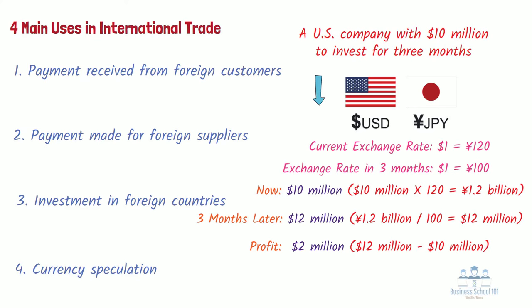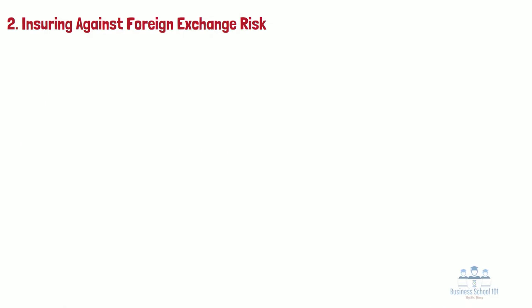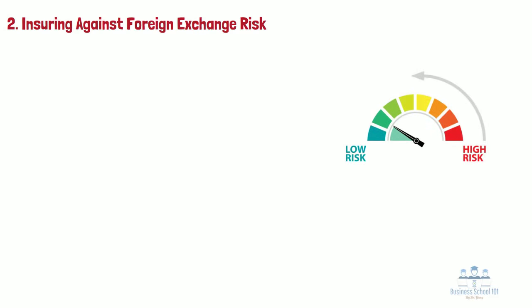Although the currency speculation example is very impressive, companies should be aware that speculation is by definition a very risky business. The company cannot know for sure what will happen to exchange rates. While a speculator may profit handsomely if their prediction turns out to be correct, they can also lose vast amounts of money if it turns out to be wrong. A second function of the foreign exchange market is insuring against foreign exchange risk — the possibility that unpredicted changes in future exchange rates will have adverse consequences for the firm. When a firm insures itself against foreign exchange risk, it is engaging in hedging.